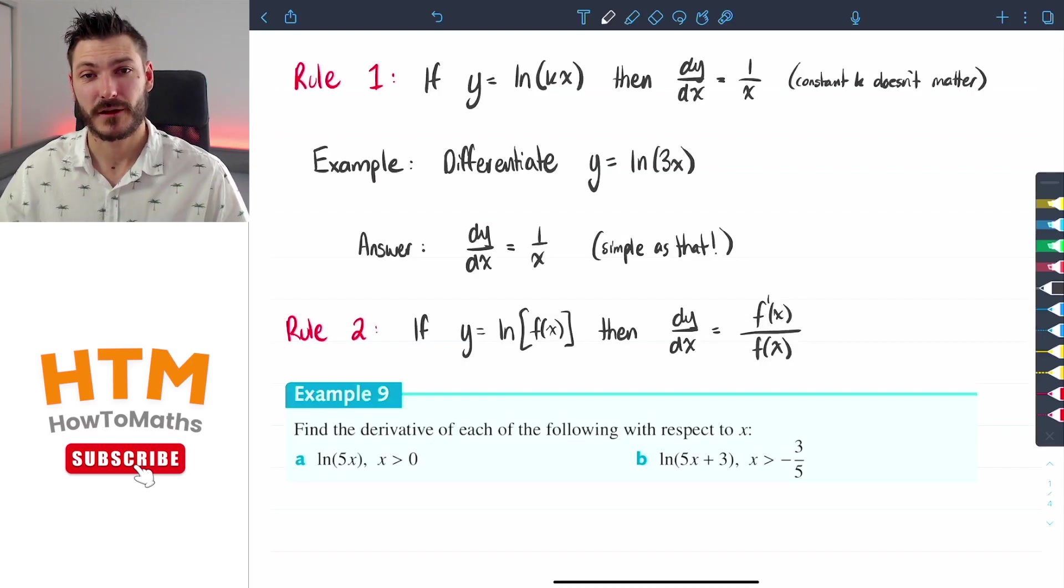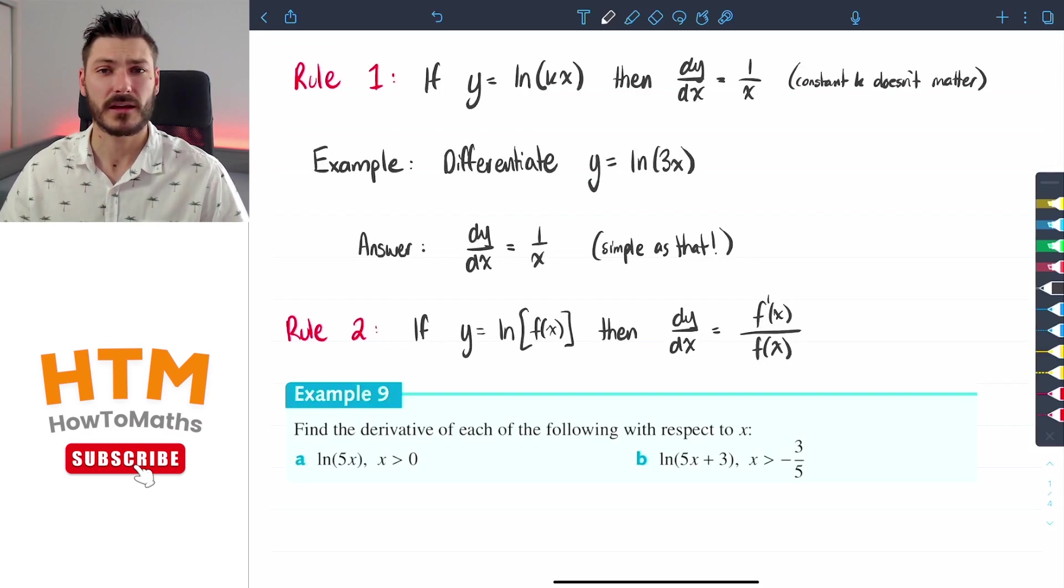The natural log function derivative is actually one of the easiest derivatives to find despite the fact that it is log base e where e is an irrational number. Let's see in this video how easy it really can be.